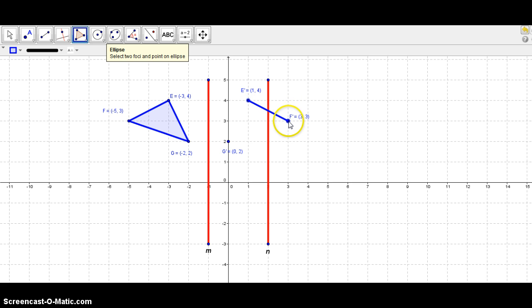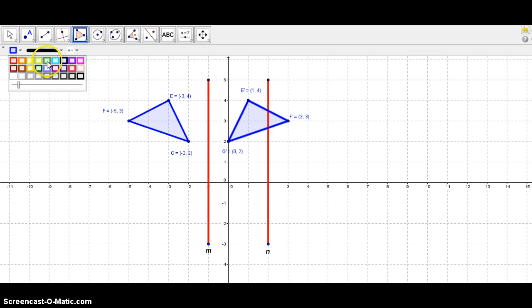All right, so let's connect these points. So we have that to G prime and to E prime. And of course we can change the color so we can see the differentiation. All right, so now the green triangle is the first reflection of your pre-image.